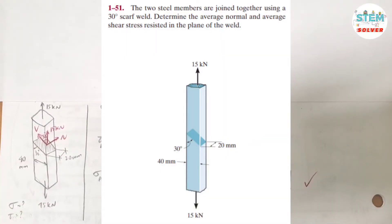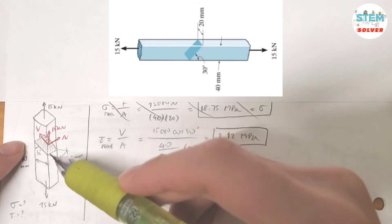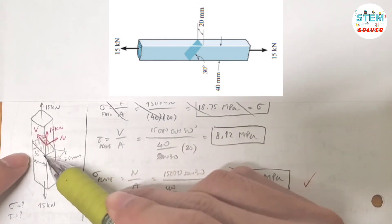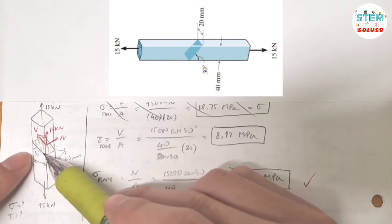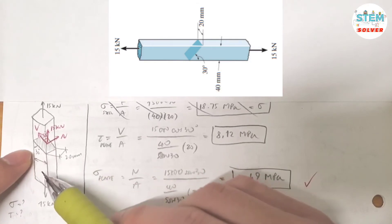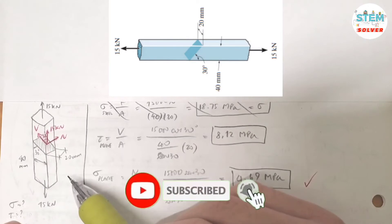Two steel members are joined together using a 30-degree shaft weld. Determine the average normal and average shear stress resisted in the plane of the weld. Here is the weld — they are joined by welding together — and here is the plane at 30 degrees. You are asked to find the normal stress and the shear stress.